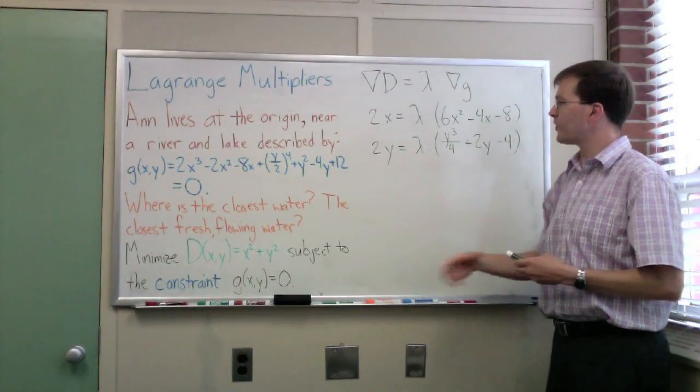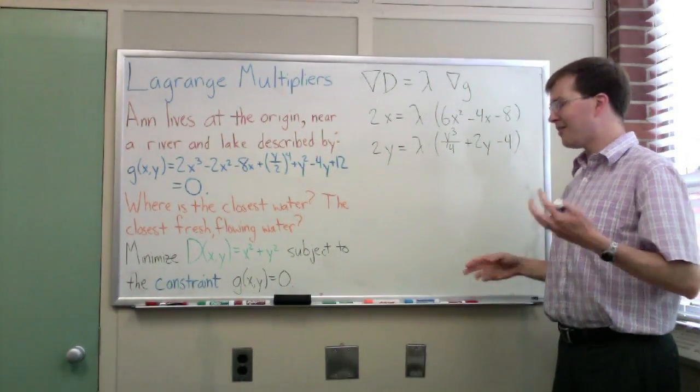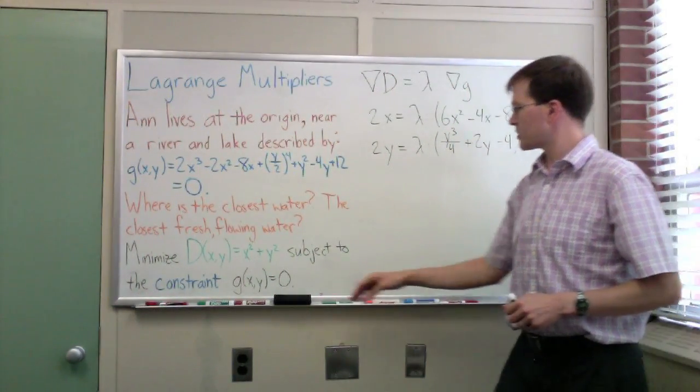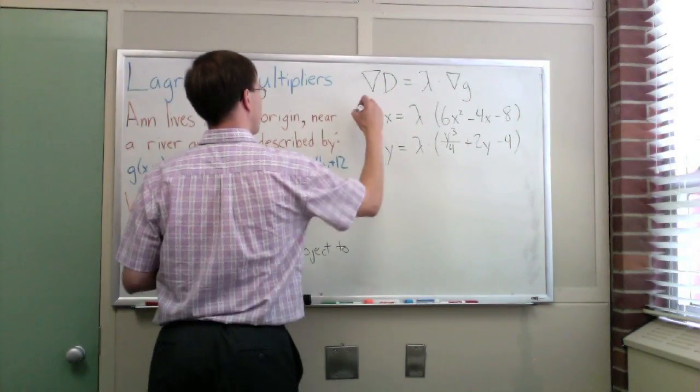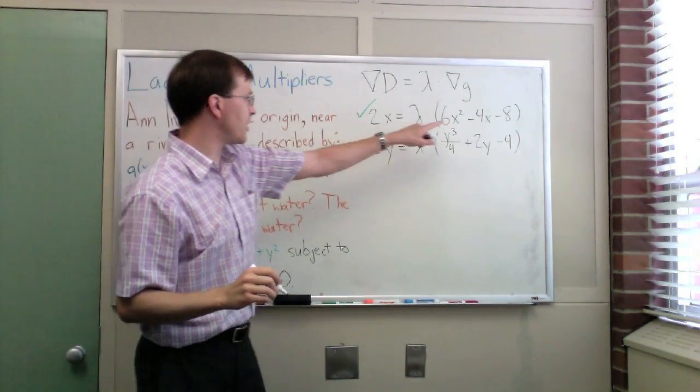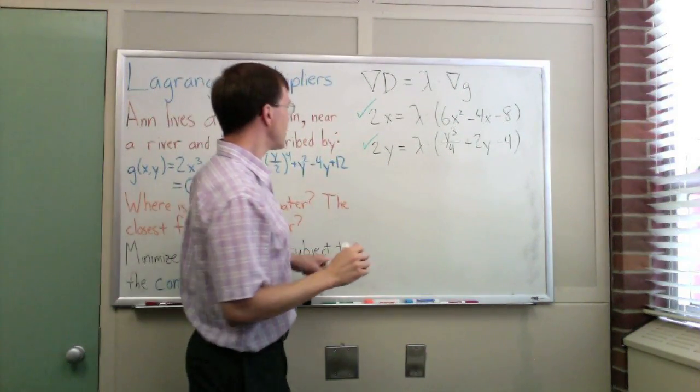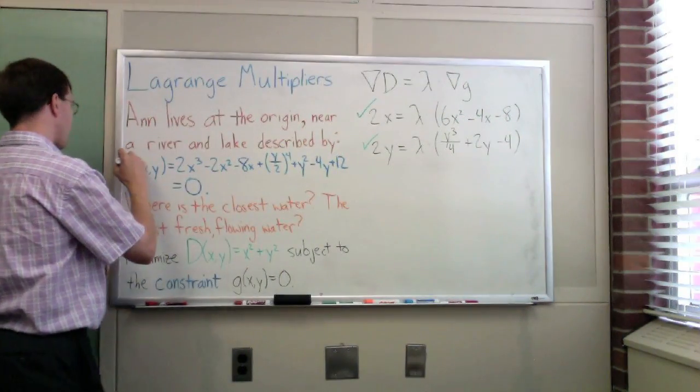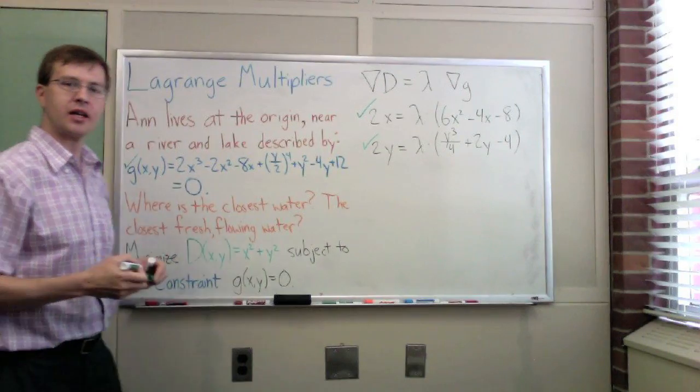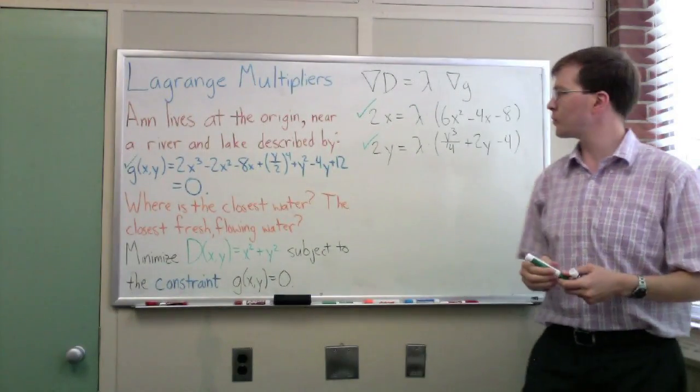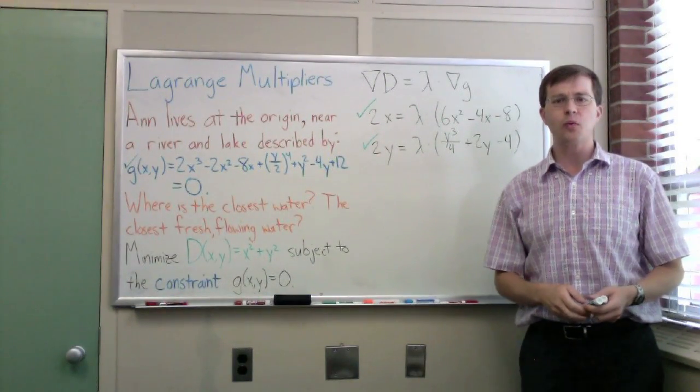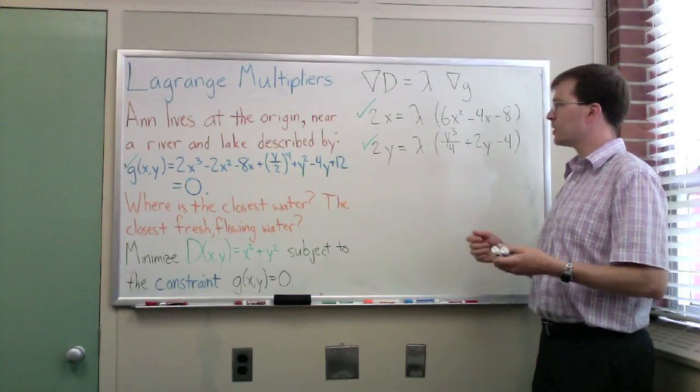And we can count that up. Looking at it, we have three equations and three unknowns. We've got this one and this one. Two equations, we've got unknowns x and y and lambda. So we've got two equations, and here's our third, g of xy equals zero. Three equations and three unknowns. You can solve that any way you'd like, really. Anything you'd like to do.